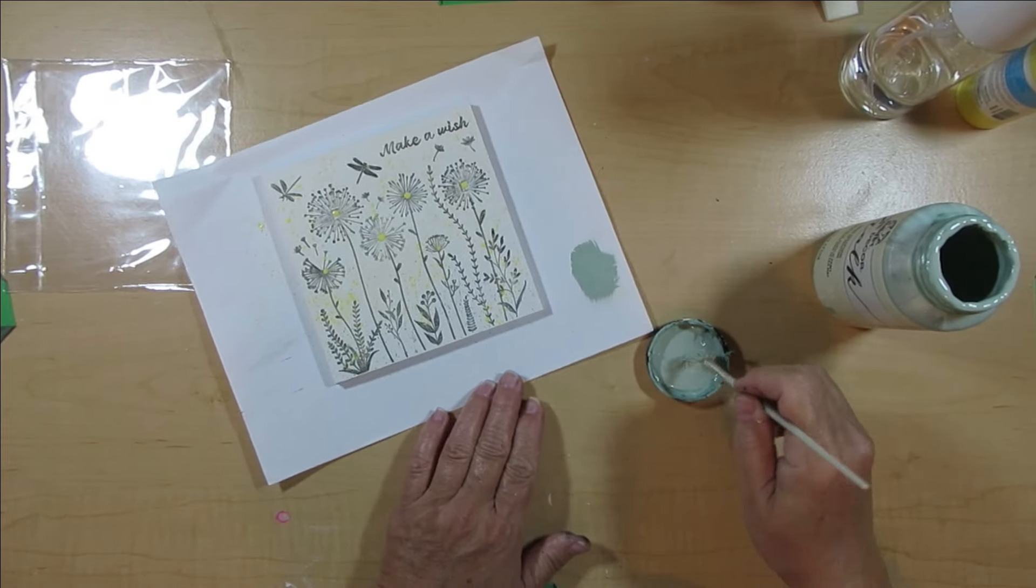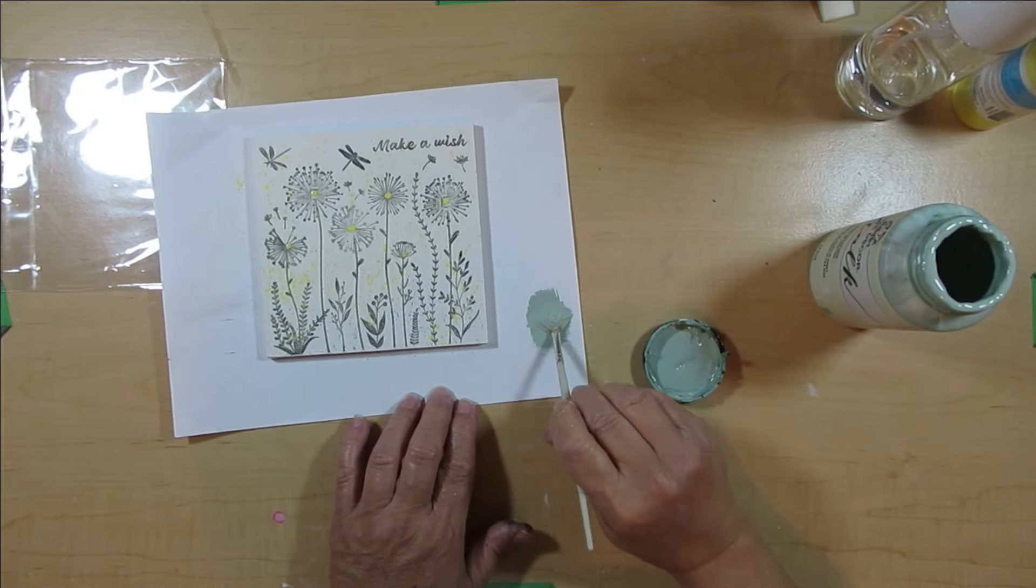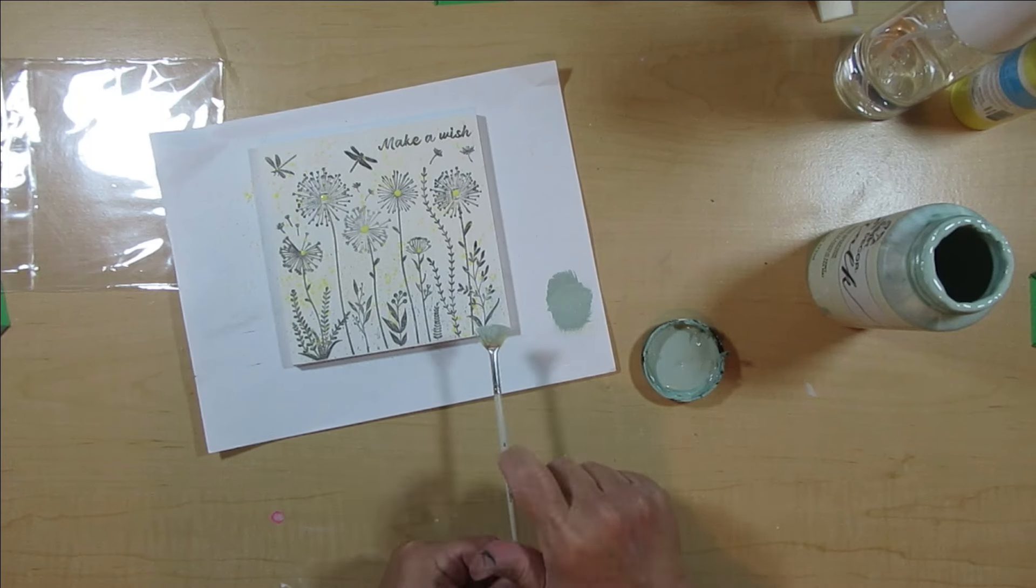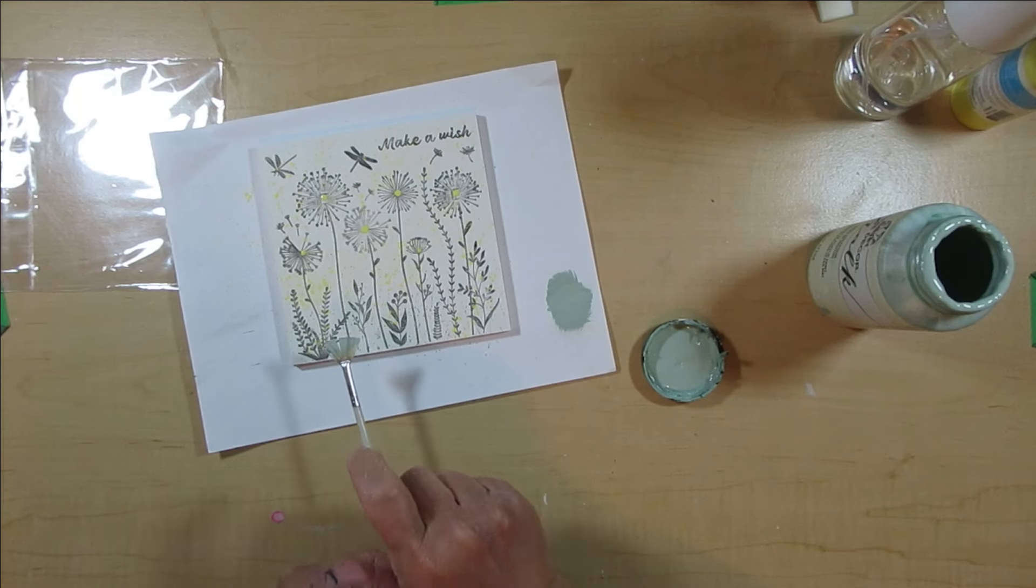I decided to use some of this sage green color. I didn't water this one down. I just wanted very fine little dots just on the bottom third of the sign and it just again added a little bit more dimension.